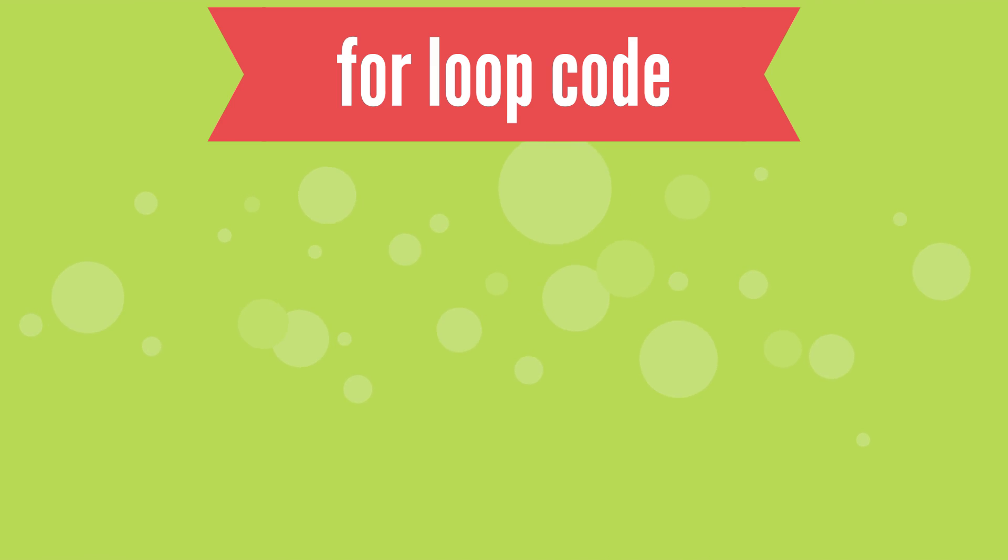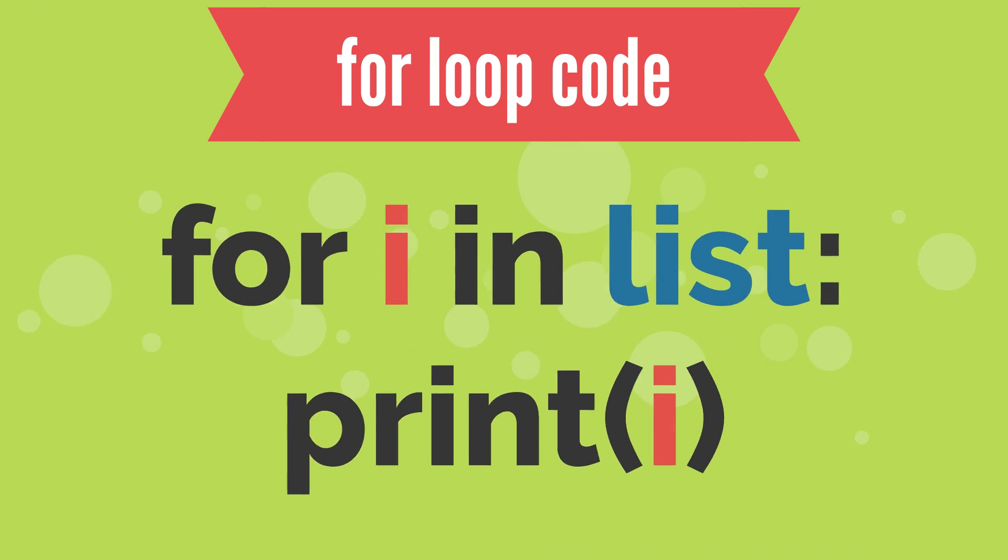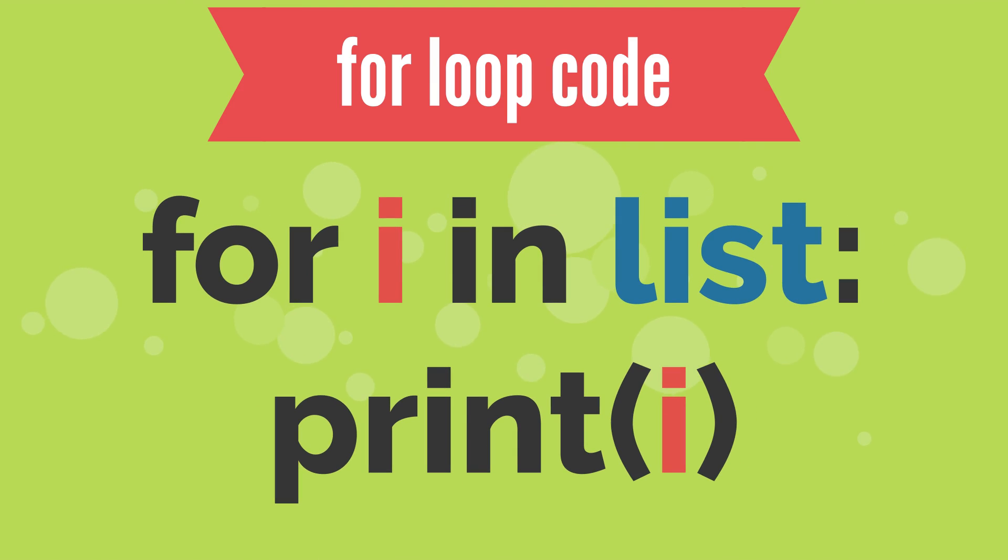In the code, you write the for loop like this. In the first line, we write for i in list colon. Here, i is a variable which we can give any name. List is the name of any list.